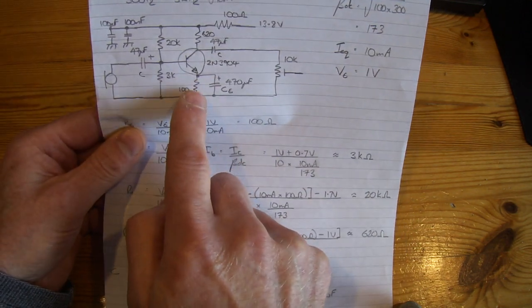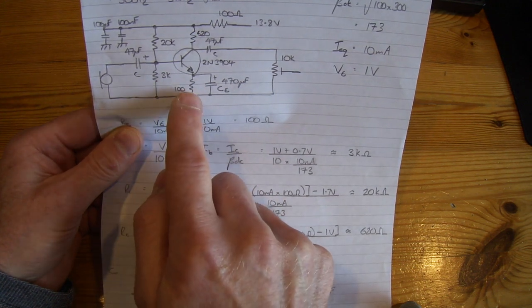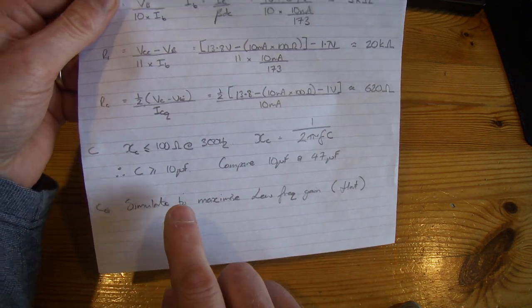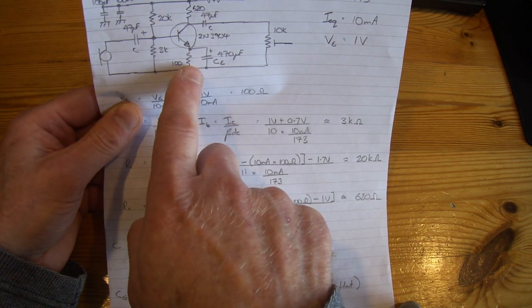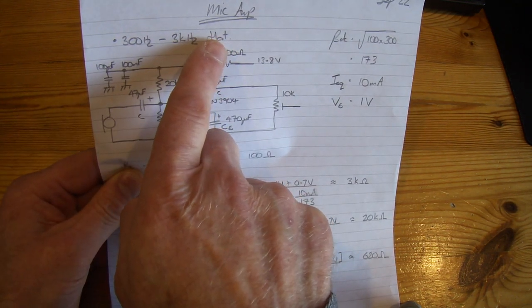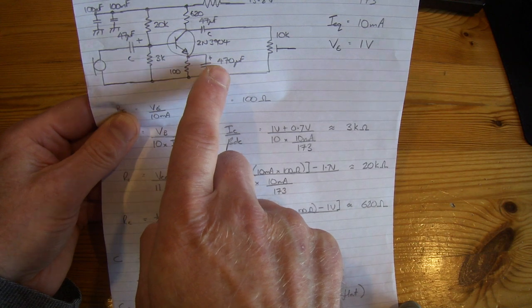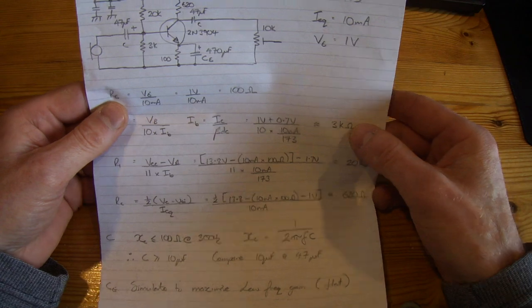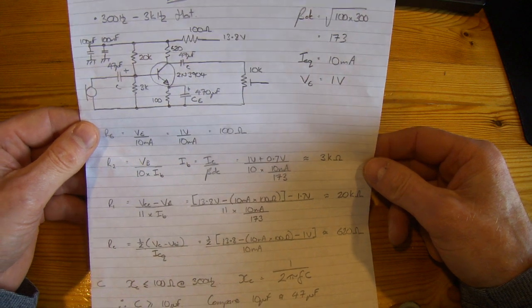In terms of the emitter bypass capacitor bypassing RE, in the past I've set that to be no greater than a tenth of RE at the lowest frequency. In this particular case, because my criteria was to be nice and flat, I've compared 100µF and 470µF in LTSpice which we'll have a look at. Like I say, I wasn't going to go into the full details but I will put this up on the blog.